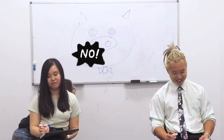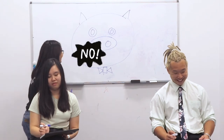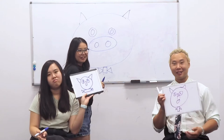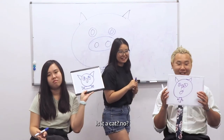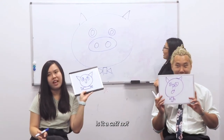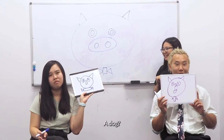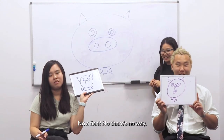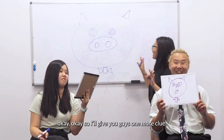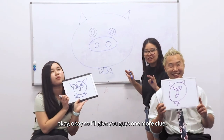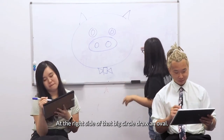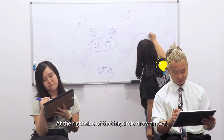Is it a bat? No! Is it a cat? A dog? No, no. A fish? No, there's no way. Okay, so I'll give you guys one more clue. At the right side of that big circle, draw an oval.